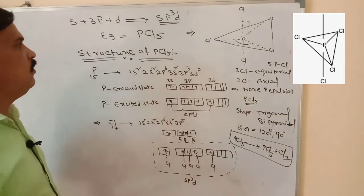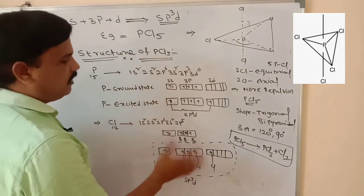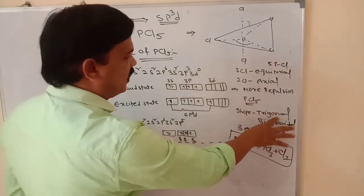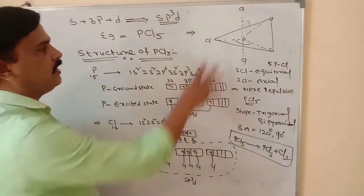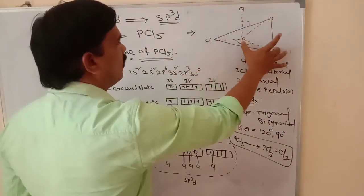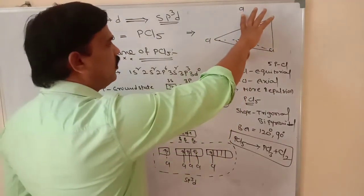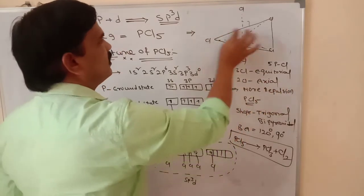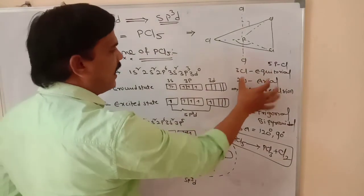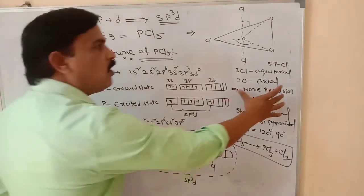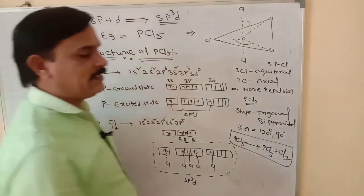Phosphorus pentachloride undergoes sp3d hybridization with 0 lone pairs — there is no lone pair. Its shape is trigonal bipyramidal and its bond angles are 120 degrees and 90 degrees. There are two types of chlorines: 3 are in equatorial corner positions and 2 are in axial positions above and below. The two axial chlorines are more repulsive, making phosphorus pentachloride more reactive.